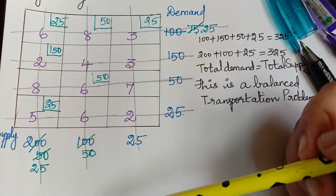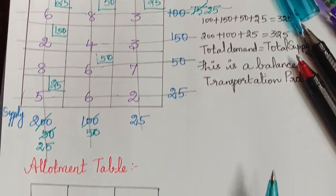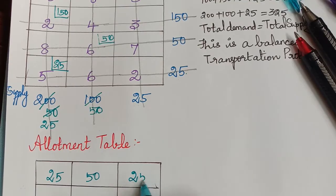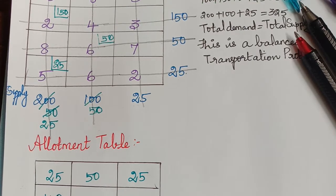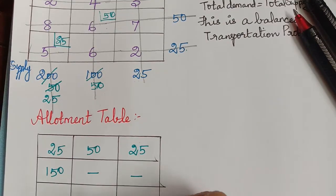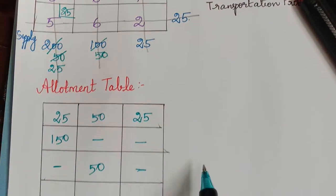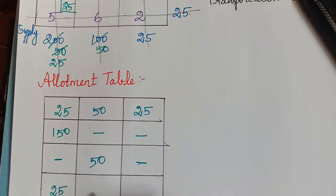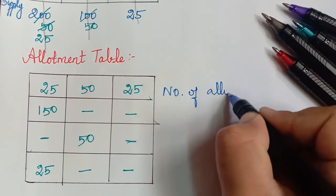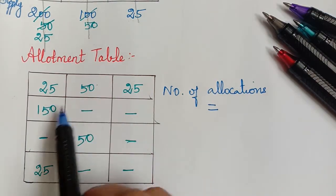Now we write the allotment table with the allocated values: 25, 50, 25, 150, 50, and 25. The remaining cells are hyphenated to indicate no allocation. The allotment table entries correspond to the cells where allocations were made across the three columns.